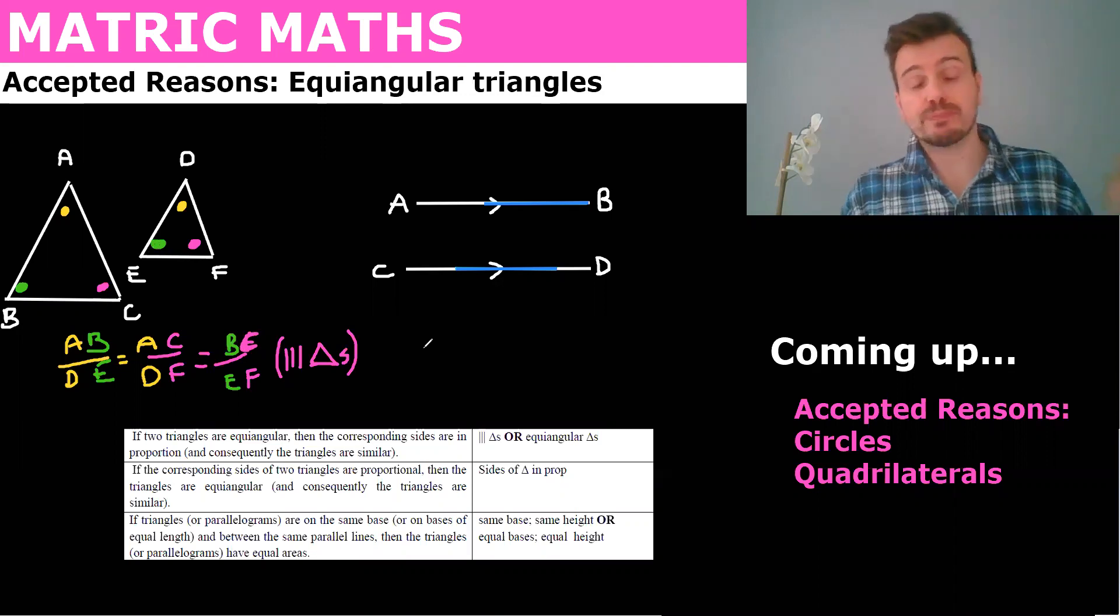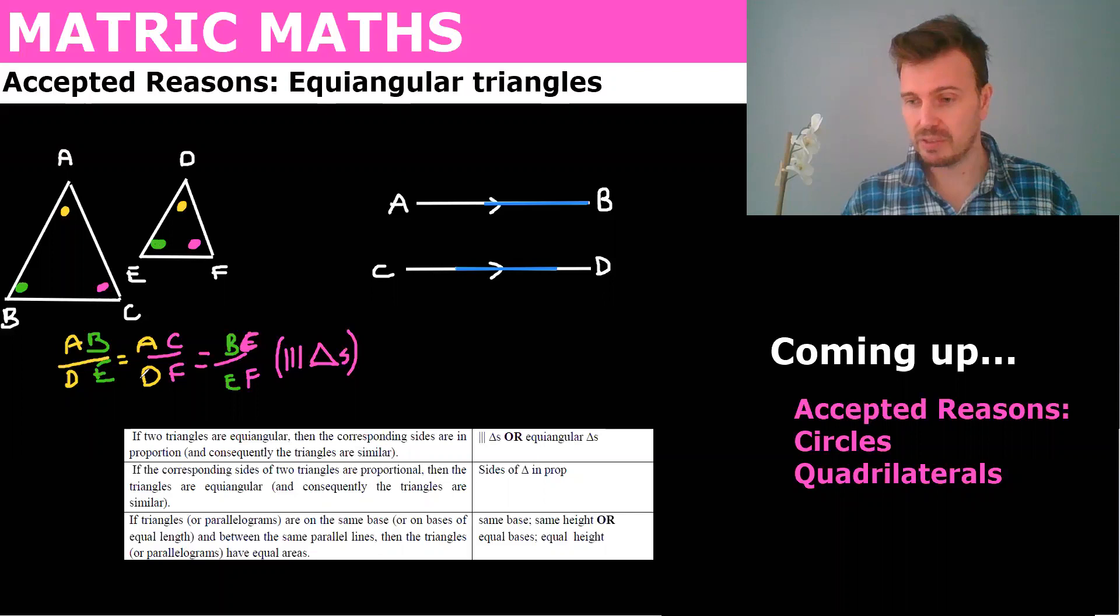Alright, so that is what you can say if you're given similar triangles. So often you'll prove triangles are similar by getting all three angles. You only need two angles because if you get two angles, then obviously the third angle will be equal because all triangles, the sum of the interior angles sum to 180.